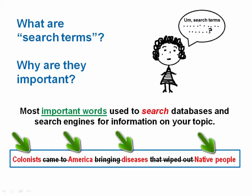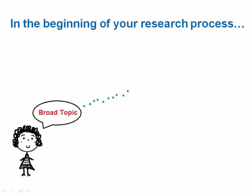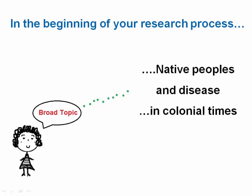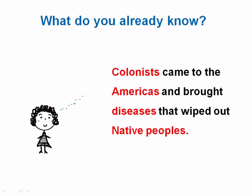Now let's get down to business. When you start your research, you may have a broad topic in mind. For example, you may have an interest in learning more about native peoples and disease in colonial times. But maybe you weren't sure how you want to approach your topic yet. Let's begin there, with what you already know. Maybe you've heard that when colonists came to the Americas way back when, they brought diseases that wiped out native peoples. That's a good way to get started. Your statement already contains a few words you can use as search terms.